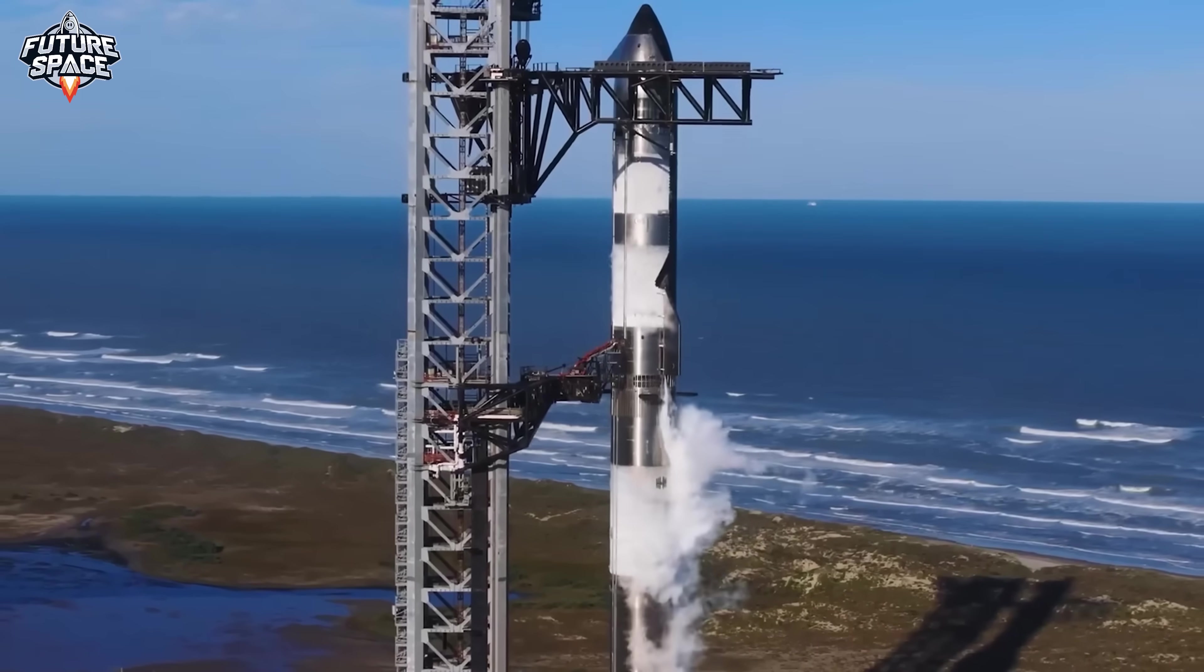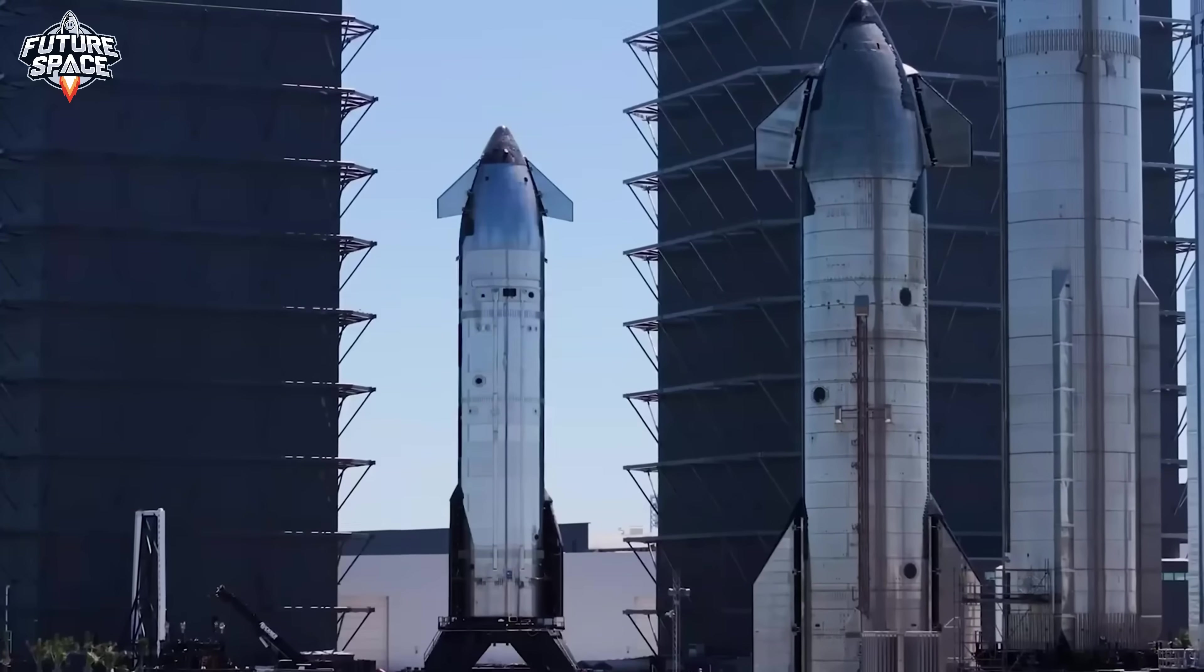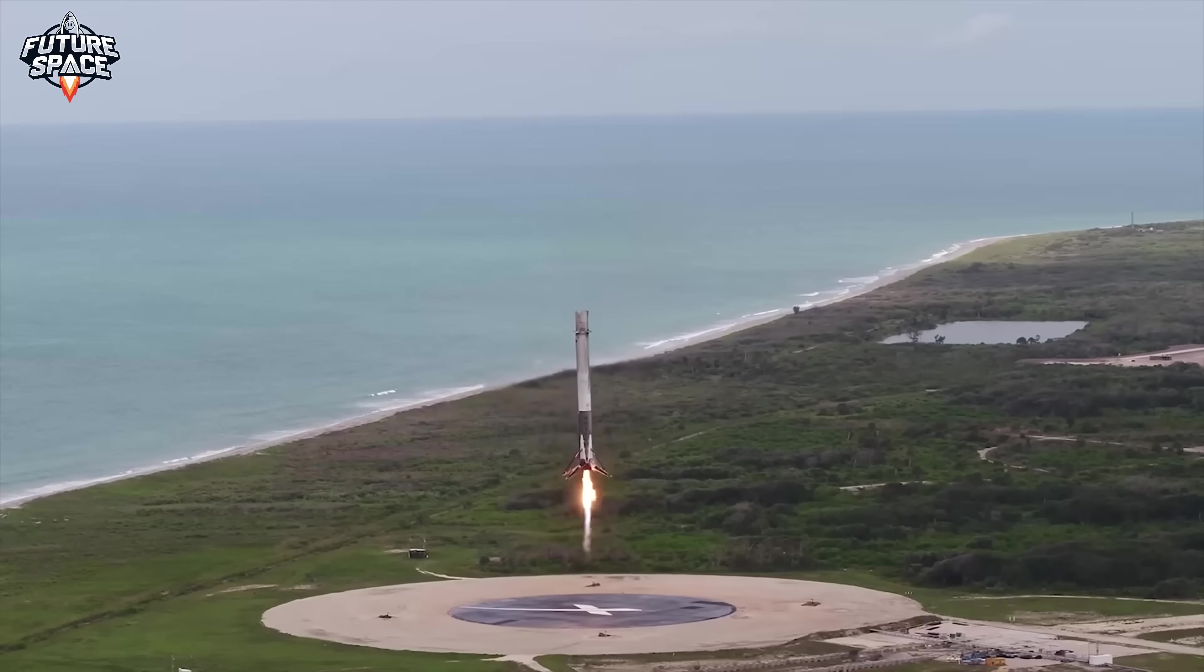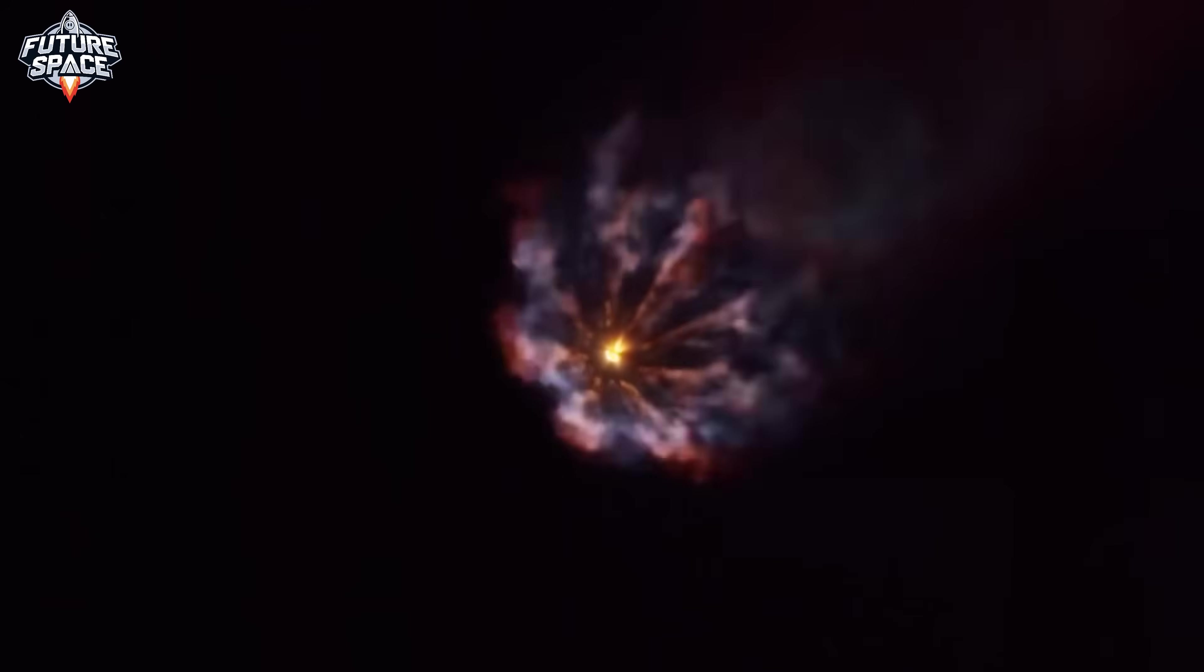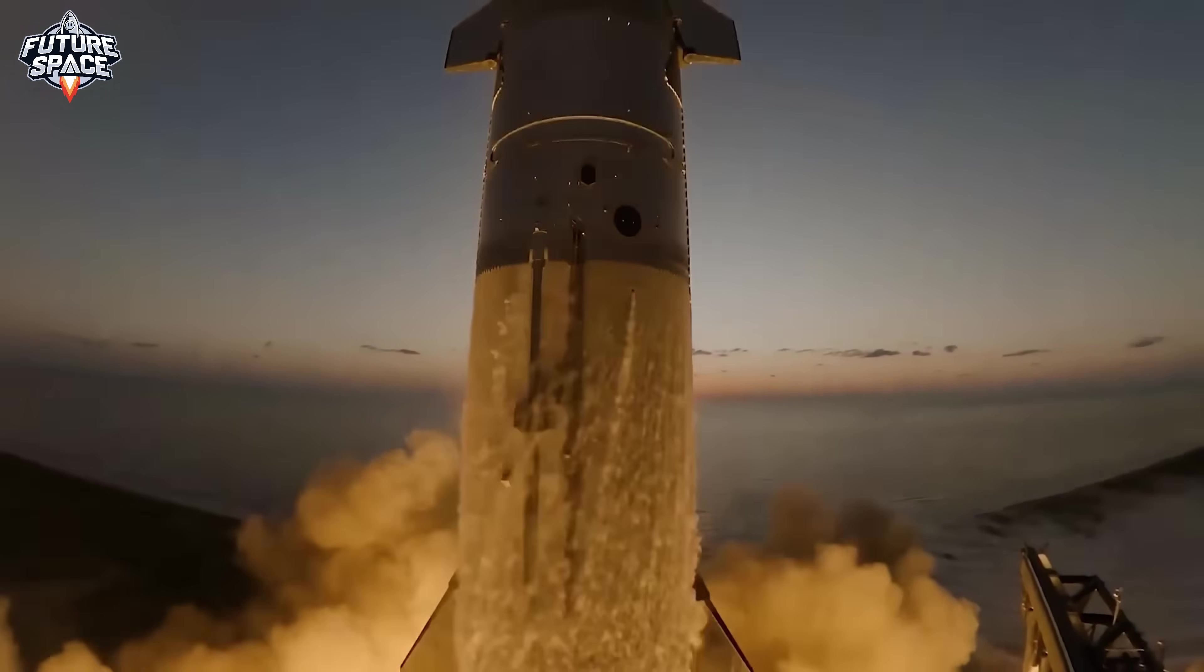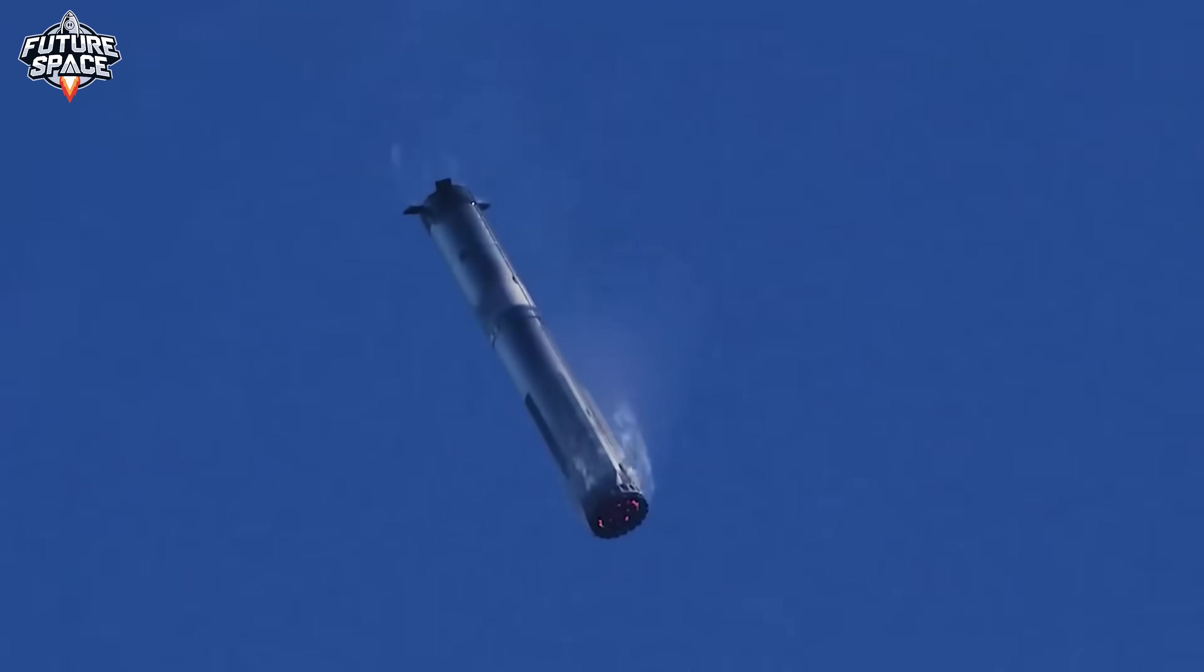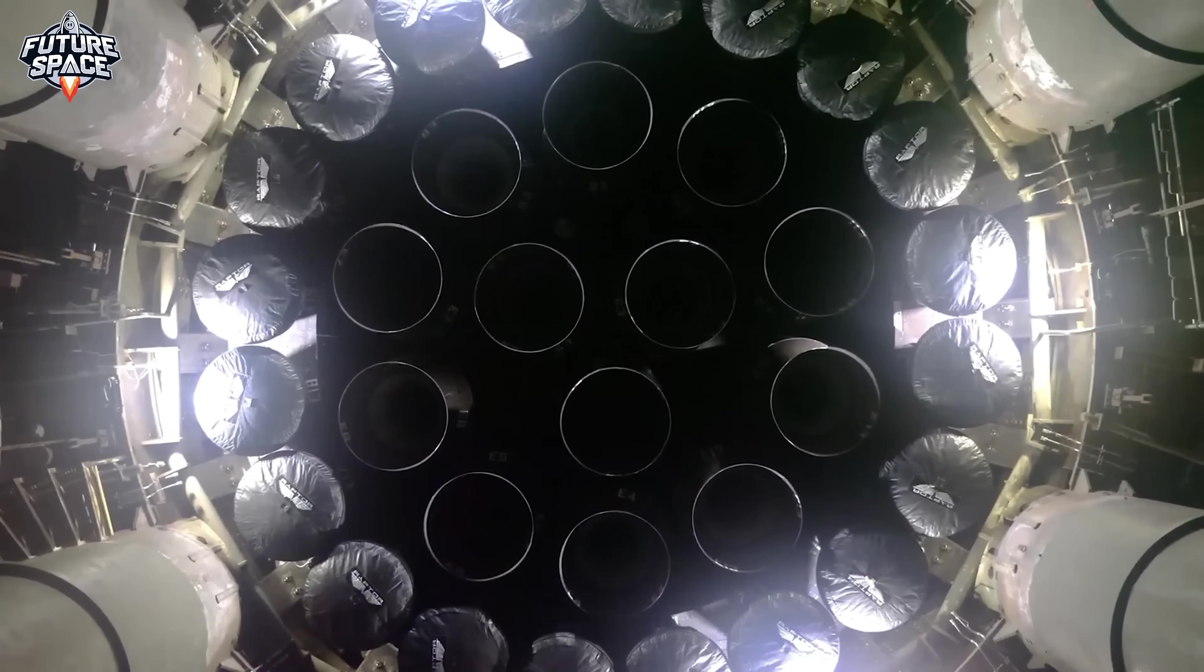Each Raptor engine is like a controlled bomb. Inside, two separate turbo pumps spin at 30,000 RPM while liquid methane and oxygen burn at 600 bar of pressure. That's like cramming 8,700 pounds of force into every square inch. To put that in perspective, your car tire has about 30 PSI. This is 290 times more powerful. But here's where SpaceX made their fatal mistake. To make these engines lightweight enough to carry payload, they stripped away every safety margin. No backup systems. No redundant cooling. No extra structural support. The result? Engines that work perfectly until they don't.